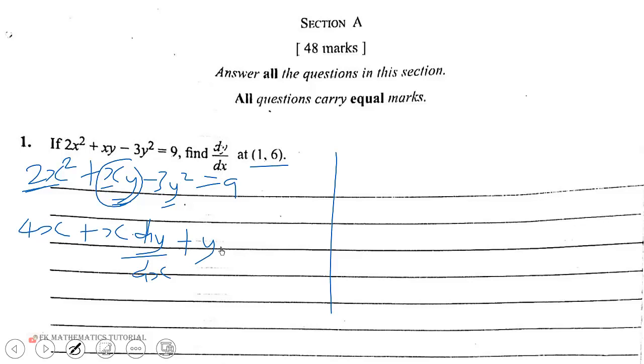Then we come to the third term. So minus, if we differentiate 3y² we get 6y, but we have to again show that we are actually differentiating with respect to x. Then when we differentiate the 9 is 0.